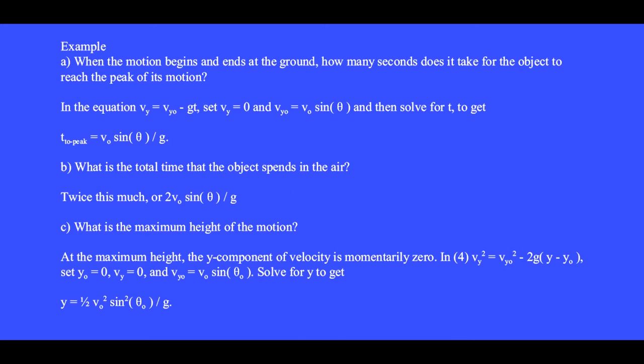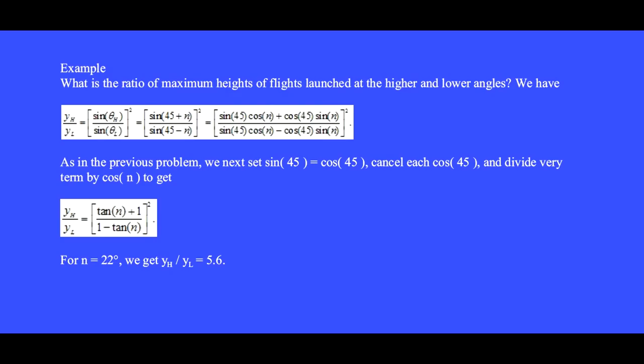In equation 4, we set y₀ equals zero since we're launched from the ground, we set v_y equals zero and the y component of the initial velocity v_y0 equals v₀ sin(θ₀). Solve for y to get y equals one half v₀² sin²(θ) divided by g. Please fill in all the algebra steps to obtain these results.